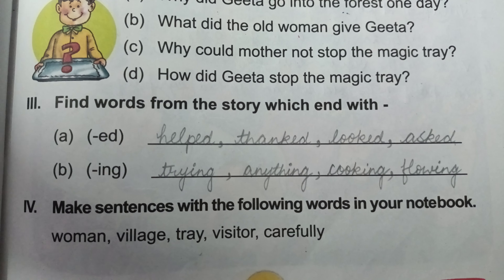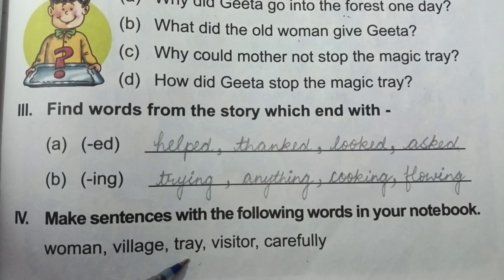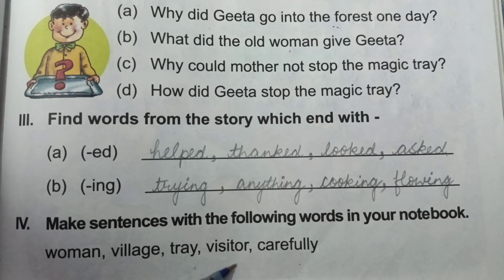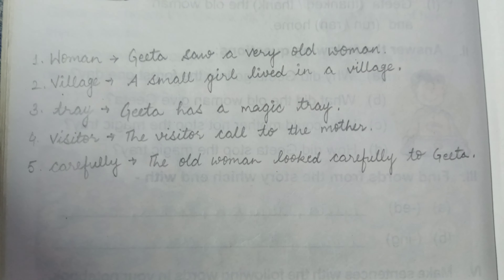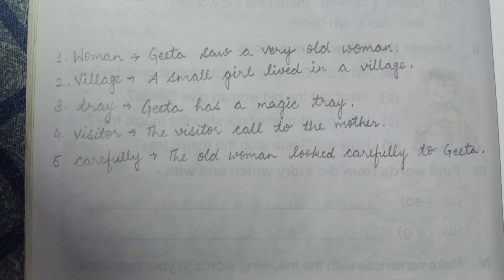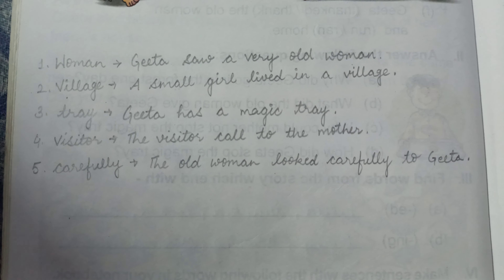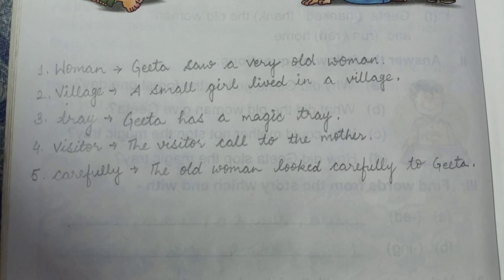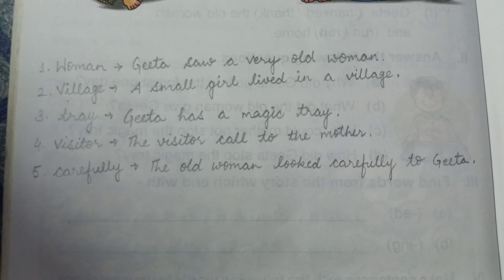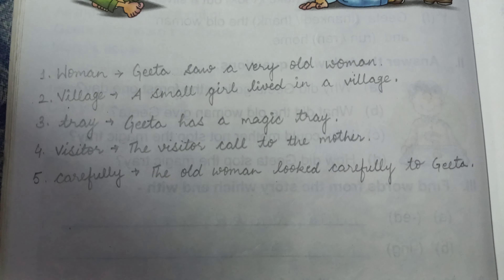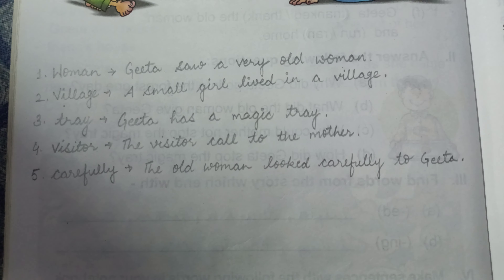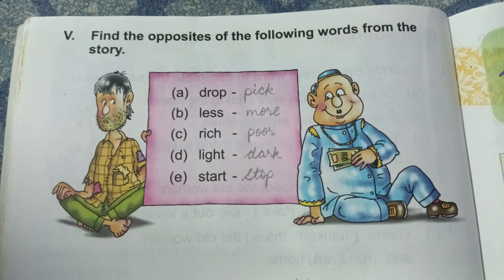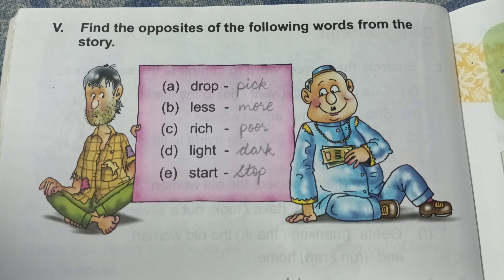Now make sentences with the following words in your notebook. You are given some words — you have to make sentences. For example, 'women' — make a sentence about a woman; 'village', 'tray', 'visitor', and 'carefully'. I have written some sentences — you can pause the video and write them down. Woman: Geetha saw a very old woman. Village: A small girl lived in a village. Tray: Geetha has a magic tray. Visitor: The visitor called to the mother. Carefully: The old woman looked carefully at Geetha.